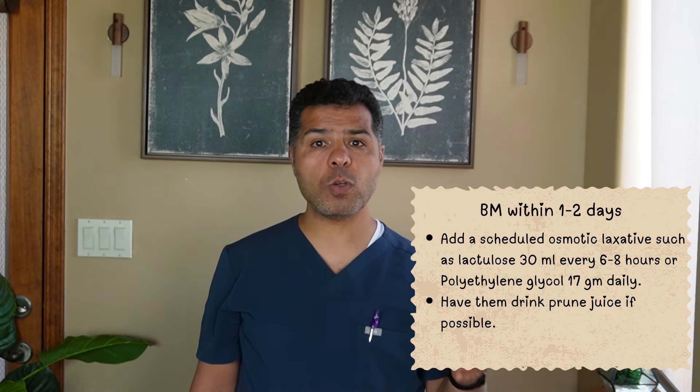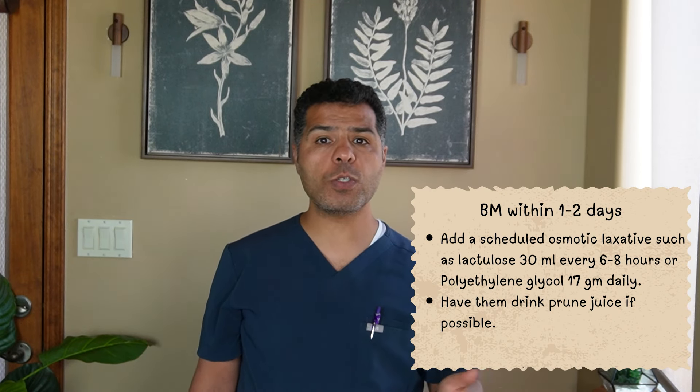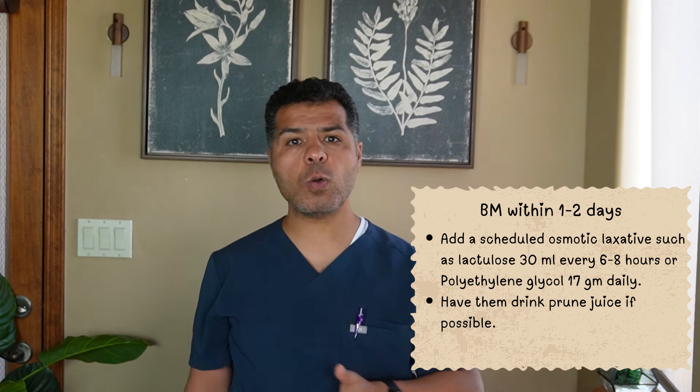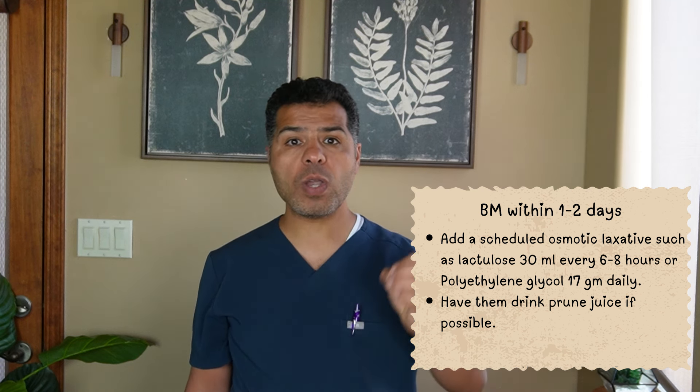The next step depends on the severity of constipation and how quickly the patient would like a bowel movement. If the patient is requesting something relatively mild and not quick, I add a scheduled osmotic laxative such as lactulose 30 ml every 6 to 8 hours or polyethylene glycol 17 grams daily. I also have them drink prune juice if possible.